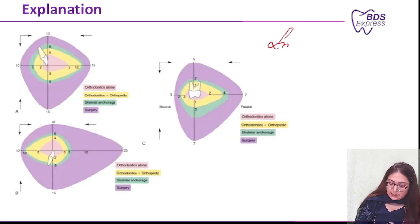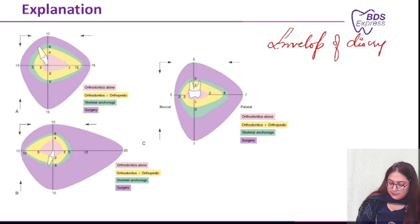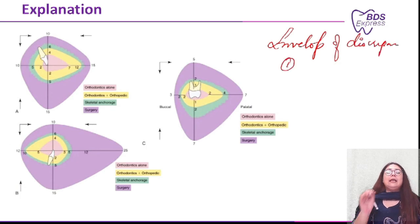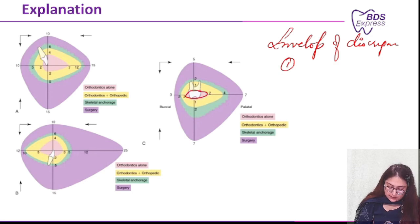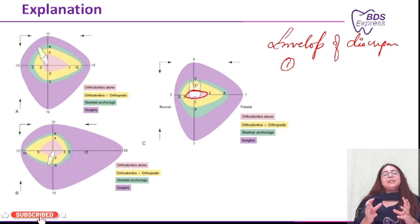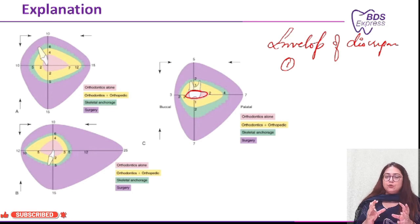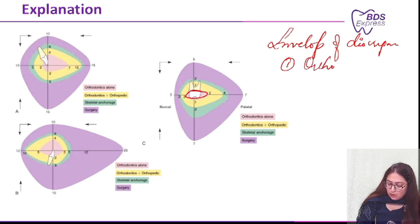Now let's see the envelope of discrepancy. In the envelope of discrepancy, the innermost circle represents that all changes — whether skeletal or dental issues — are achievable only through orthodontic treatment alone.